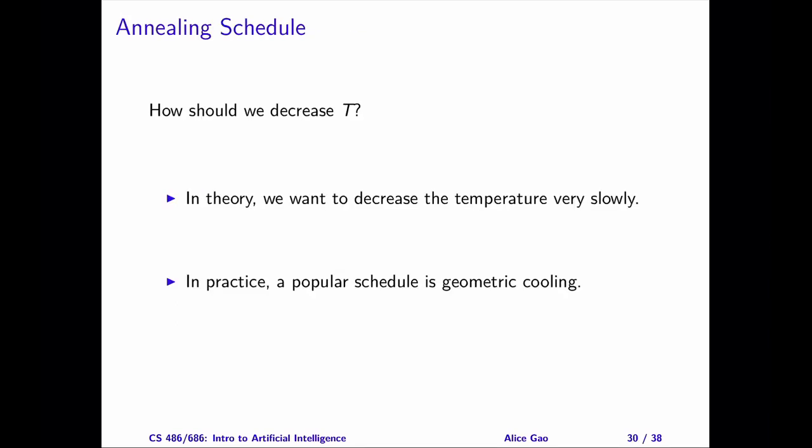The algorithm decreases the temperature at each step. How exactly do we do this? The way we decrease the temperature is called the annealing schedule. In practice, we want to decrease the temperature very, very slowly. If the temperature decreases slowly enough, then simulated annealing is guaranteed to find the global optimum with a probability approaching 1.